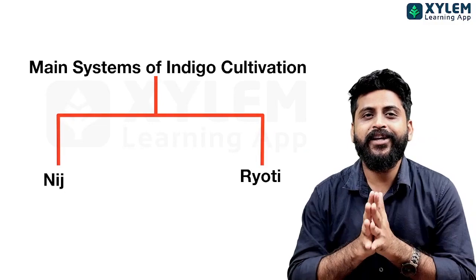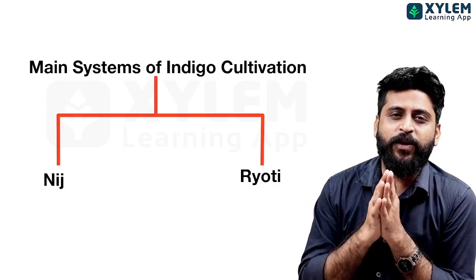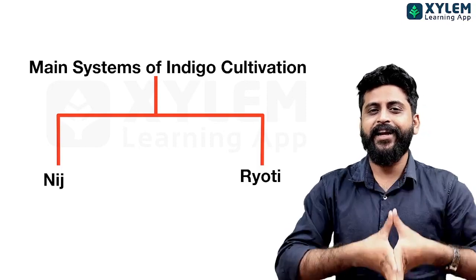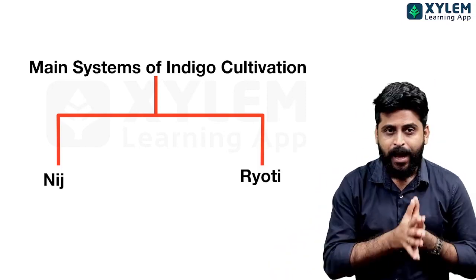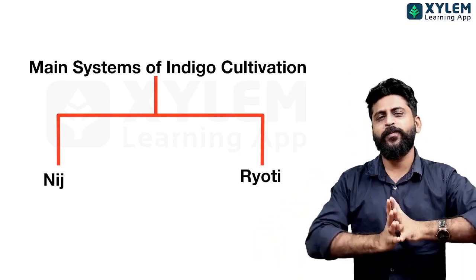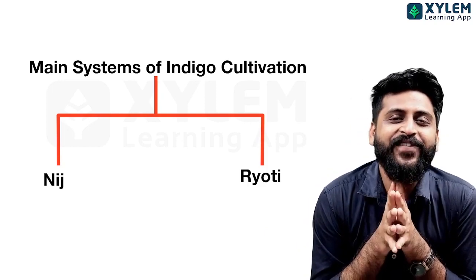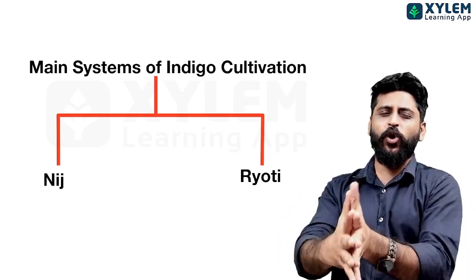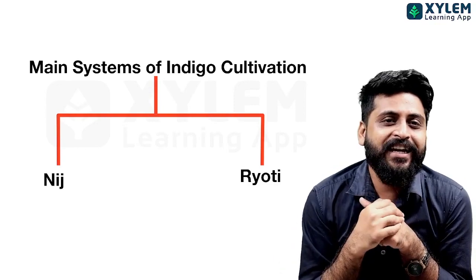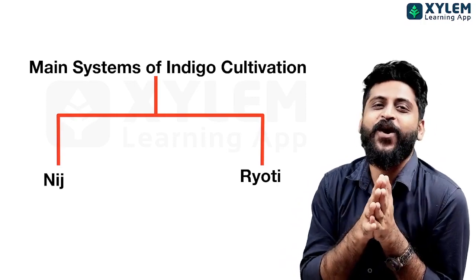In summary, the two types of Indigo Cultivation are Niche and Raiti. Thanks to all. Bye.